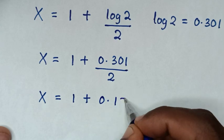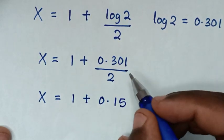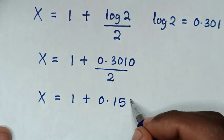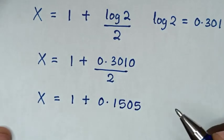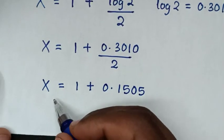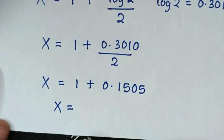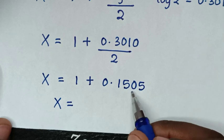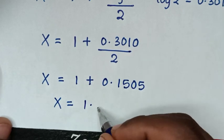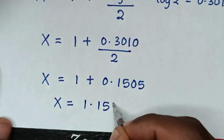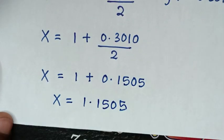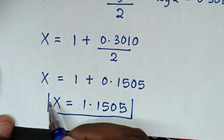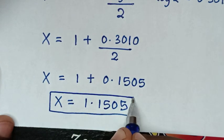So it will be x is equal to (1 plus 0.301) divided by 2. Here, 0.301 divided by 2 is 0.1505, and 1 divided by 2 is 0.5. Therefore, x is equal to 1.1505. This is the final answer for the value of x in this problem.